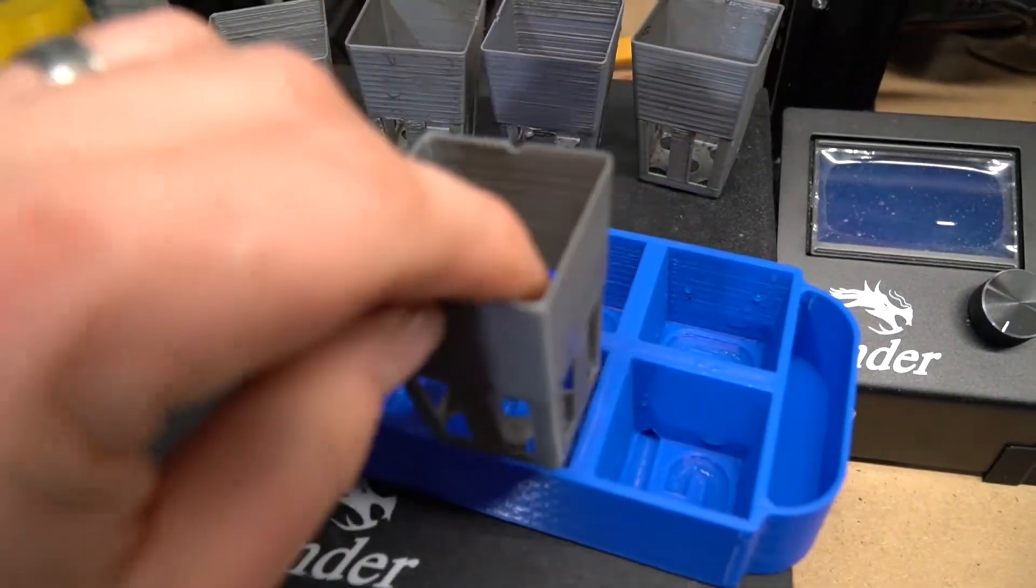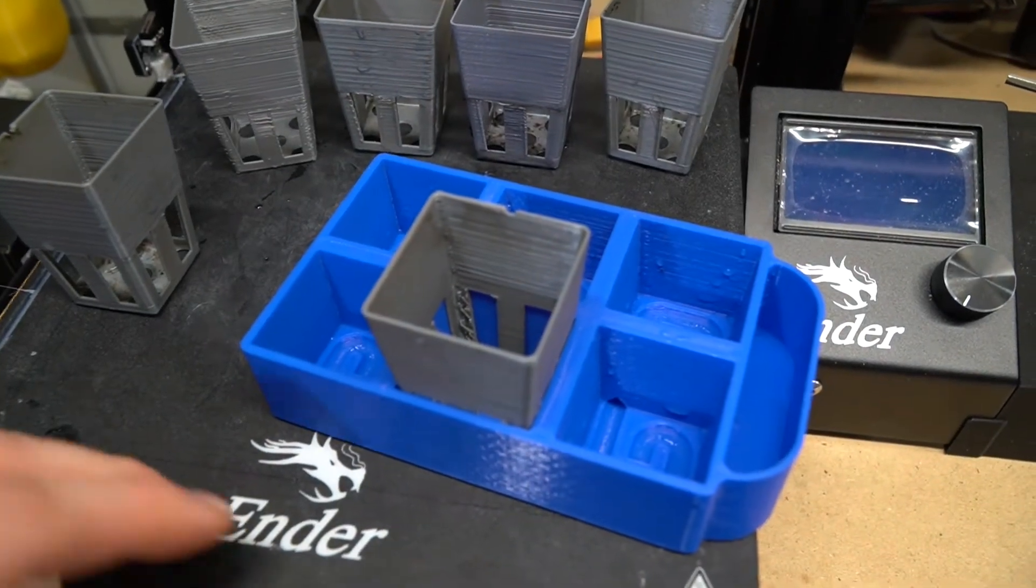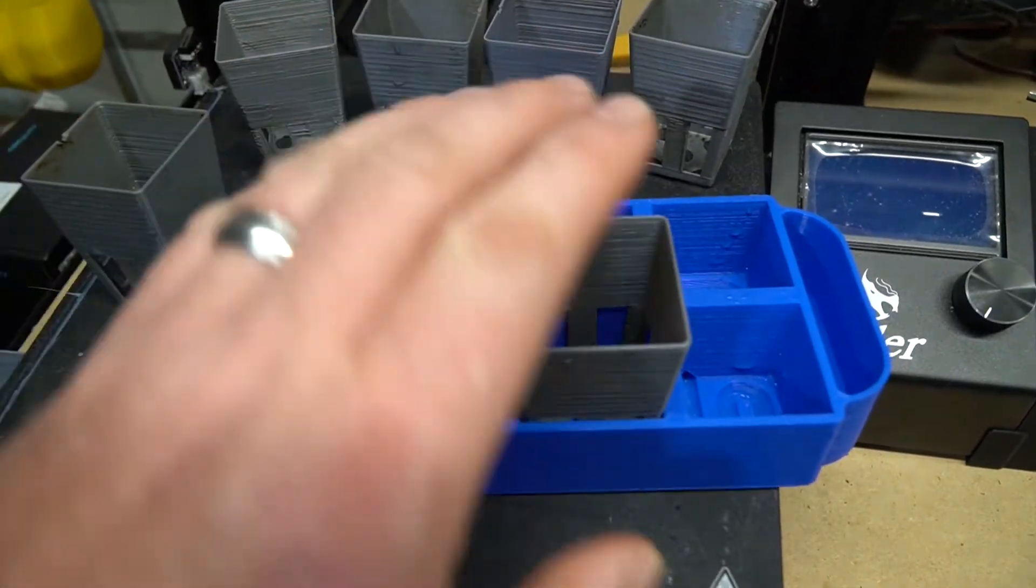You take these little pods, you put them in, you fill them with dirt and you plant your seed. And then when you're ready to transplant it, it's pretty simple: you can pull these little pods out, pull your plant out, and plant them in your garden.